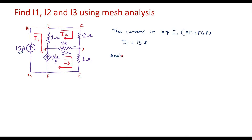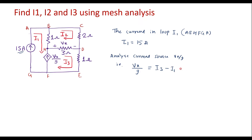Analyzing current source Vx/9: current I3 is flowing from F to H, whereas current I1 is flowing from H to F, so I3 and I1 are opposite to each other. One more thing is I3 and Vx/9 are in the same direction. So I can write: Vx/9 = I3 − I1. I will call this equation 2.